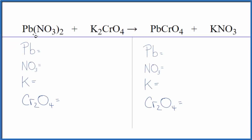In this equation, we have lead nitrate plus potassium chromate. To balance the equation, we'll use a trick that'll make it a lot easier. Let's count the atoms up. We have one lead, and...